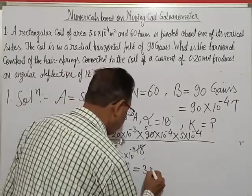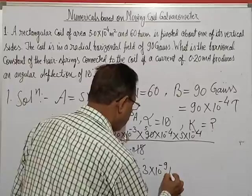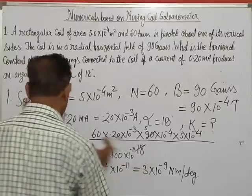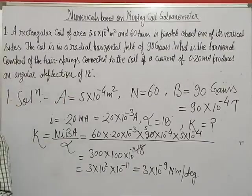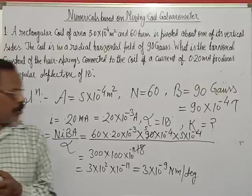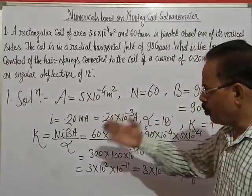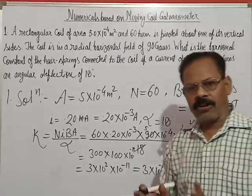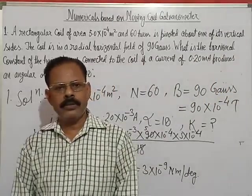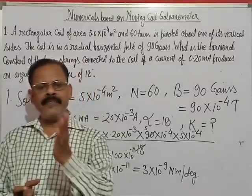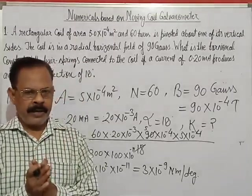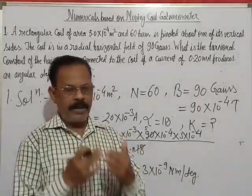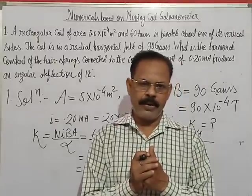Solving through the calculation, K comes out to be 3×10⁻⁹ newton meter per degree। यह रहा question number one और two का solution। Alpha से हम जो भी derivation लिया है उसमें alpha माने चले हैं — यह ध्यान में रखेंगे। Okay, thank you।